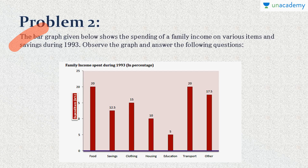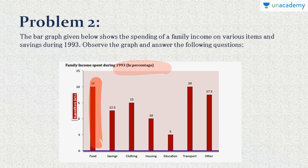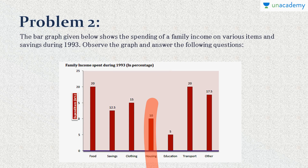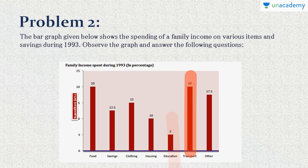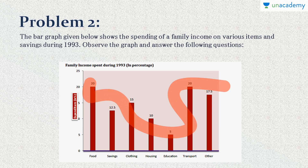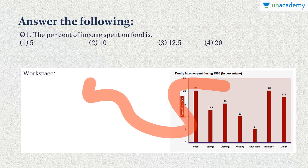The values are given in percentage: food 20%, savings 12.5%, clothing 15%, housing 10%, education 5%, transport 20%, and others 17.5%. If you add up all these values you'll get 100%, which is the total income of the family.